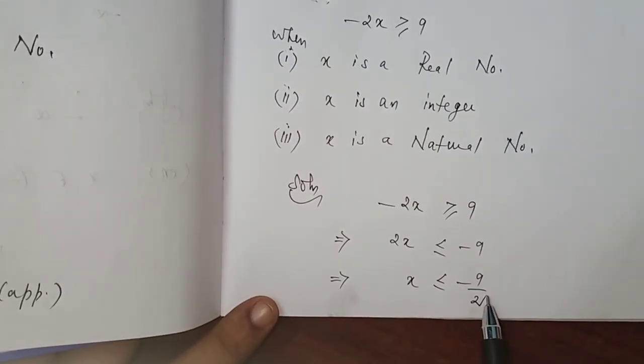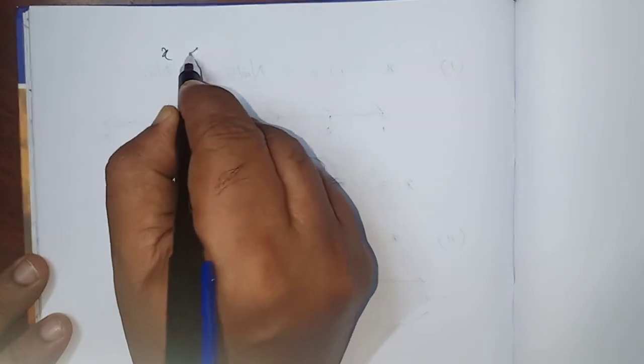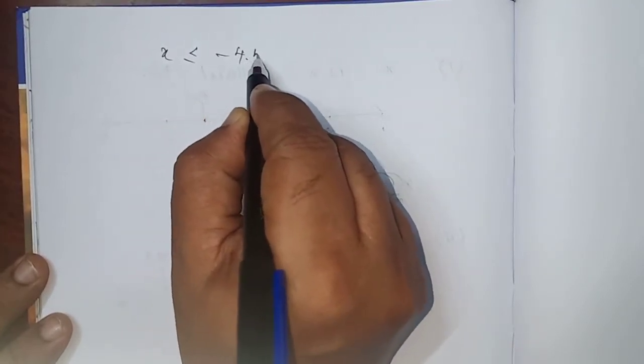9 by 2, you know that, that is 4.5. x less than or equal to -4.5.